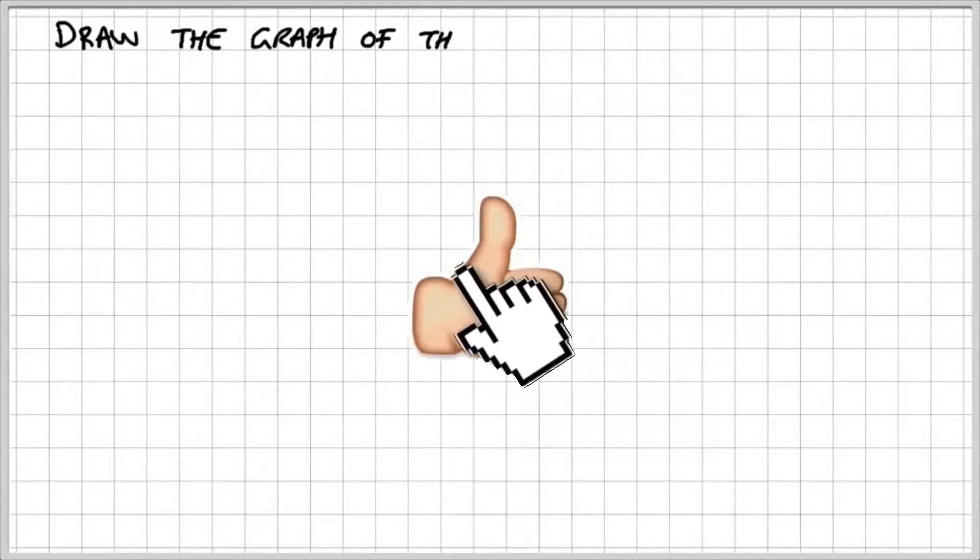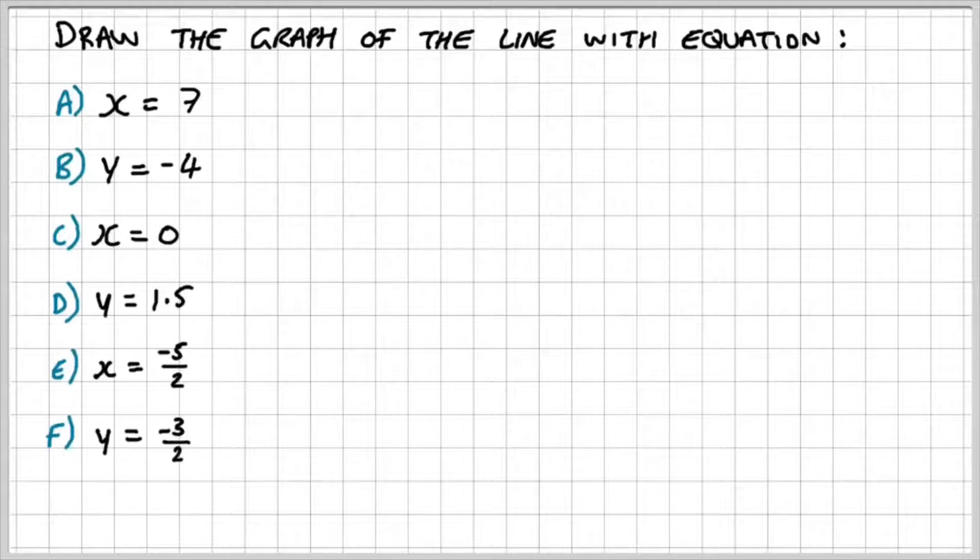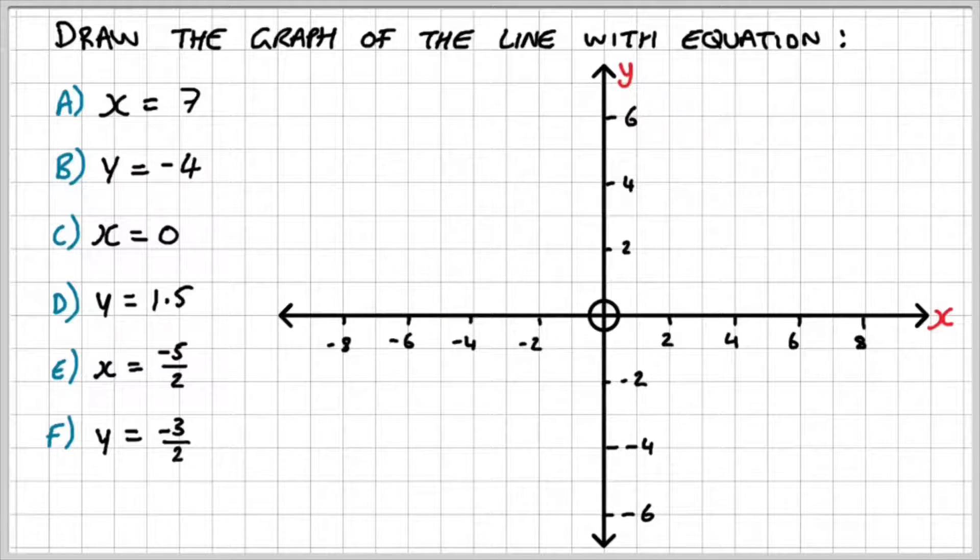Let's move on to an example where we draw the line of a graph of the following equations. So first thing first, I'm going to draw my Cartesian plane. So for part a, I'm going to draw x equals 7. That's this line here.